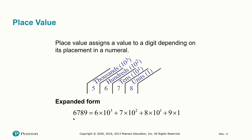When you see a familiar number like 6,789, your brain comprehends quite a bit of detail rapidly. Starting from the right, you have the units digit, then the tens digit, then hundreds, then thousands. So 6,789 can be written as 6 times 10 cubed, plus 7 times 10 squared, plus 8 times 10 to the 1, plus 9 times 10 to the 0. Notice you can write the ones place as 10 to the 0, since any non-zero number raised to the power of 0 equals 1.